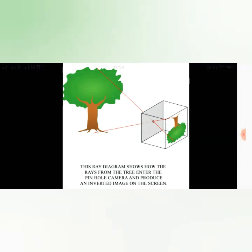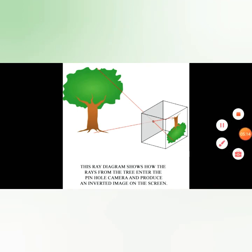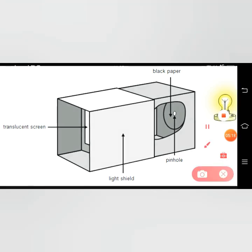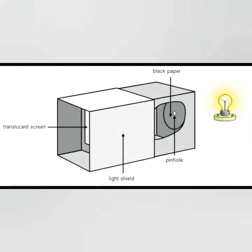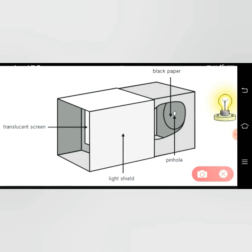Through another picture we will understand this better. There is a transparent screen, then a black paper, then the pinhole camera, then a lighted object. If light from an object — suppose a pen — enters the pinhole camera, only a little light will pass through the small hole to the middle of the screen, and the image will be inverted. You will see the image on the transparent sheet.